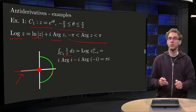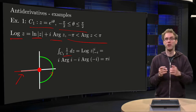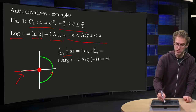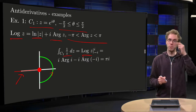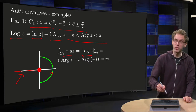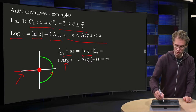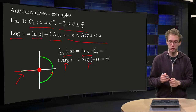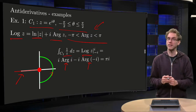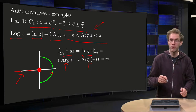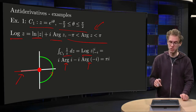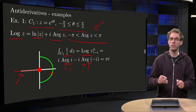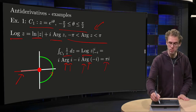That means the argument of z will be between minus pi and pi. It's now easy to compute the integral, because the antiderivative of 1 over z equals log of z, evaluated from the endpoint i to the starting point minus i. We get i times the argument of i for the endpoint, minus i times the argument of minus i for the starting point. At the endpoint the argument equals pi over 2, and at the start point the argument equals minus pi over 2, due to the choice of the branch cut. So we get i times pi over 2 minus i times minus pi over 2, giving a total of pi times i.